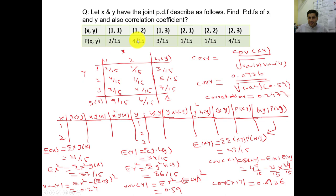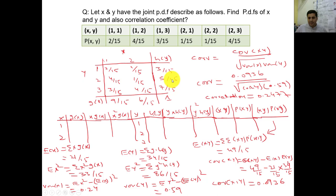Summing the rows gives the marginal probabilities for x: g(1) = 9/15, g(2) = 6/15. Summing the columns gives marginal probabilities for y: h(1) = 3/15, h(2) = 5/15, h(3) = 7/15. To verify correctness: 3+5+7 = 15, so 15/15 = 1, and 9+6 = 15, so 15/15 = 1. This confirms we have correctly constructed the probability distribution function, as required by the first part of the question.